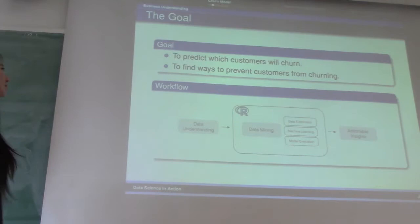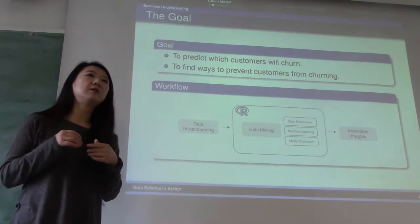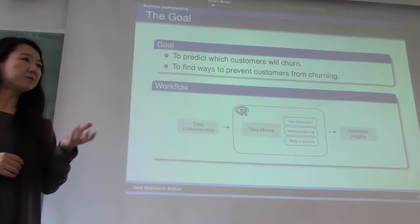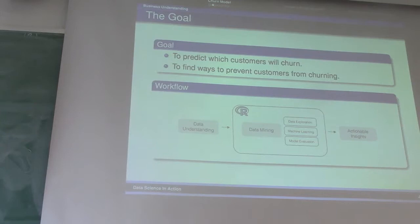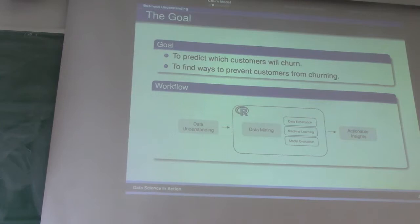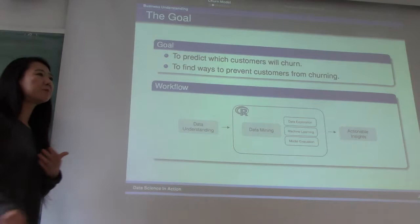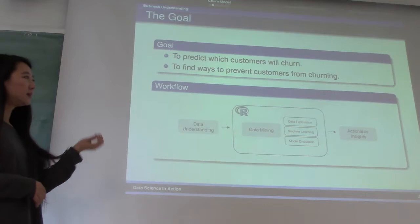Let's start with business understanding. The goal of customer churn model is to predict which customers will churn. A customer is caught having churned if he or she has not renewed the subscription after the subscription has expired. In other words, in the world of customer retention, there are two types of customers: churned customers and renewed customers. Ideally, we want to be able to find ways to prevent customers who may be about to churn from churning. If we can predict which customers will churn, then we can identify means to stop that from happening.